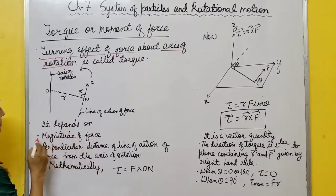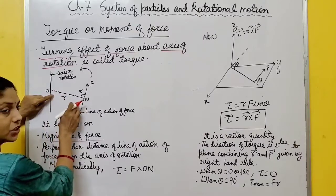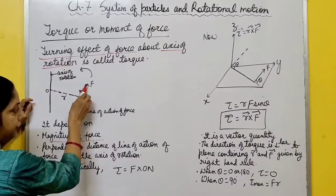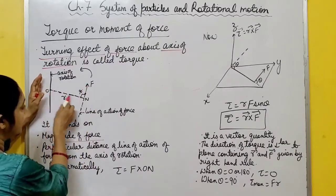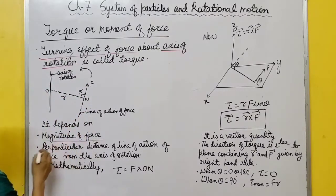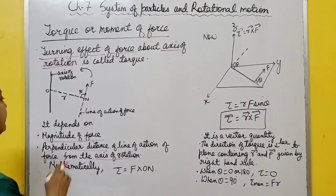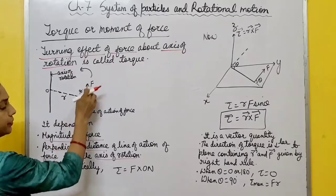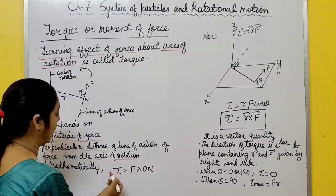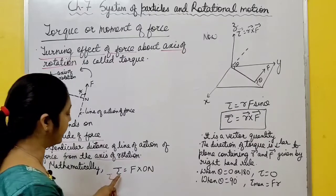Torque depends on magnitude of force and on perpendicular distance from the axis of rotation to the line of action of force. Mathematically, torque τ = F × d (force times perpendicular distance). Torque is a vector quantity, so angle also matters. If you apply force at 90 degrees to the perpendicular distance, maximum turning effect occurs. If angle between F and R is 0, no turning effect. So torque is given by τ = R × F (vector product).